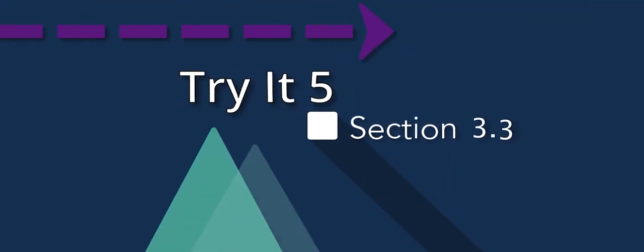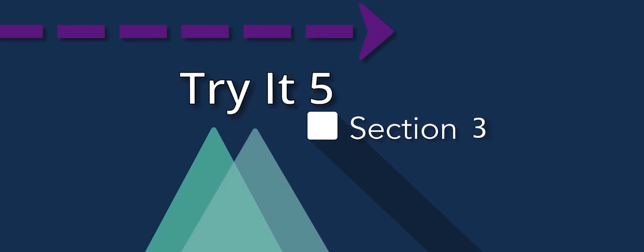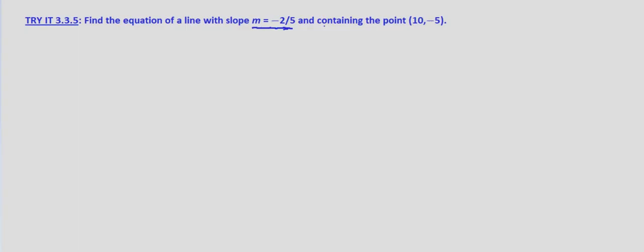In this example we're looking at what to do when we're given the slope and a point on the line in order to determine the equation for the line.